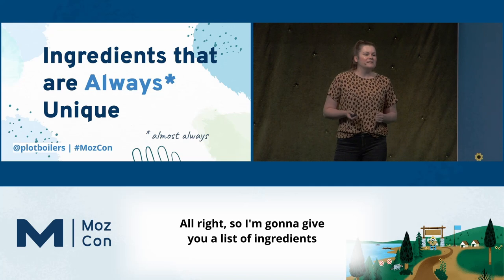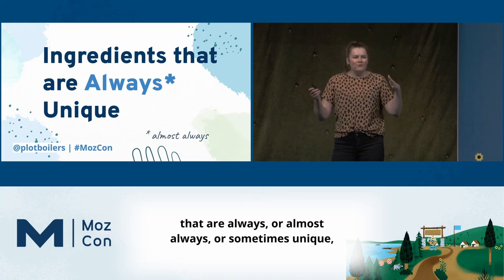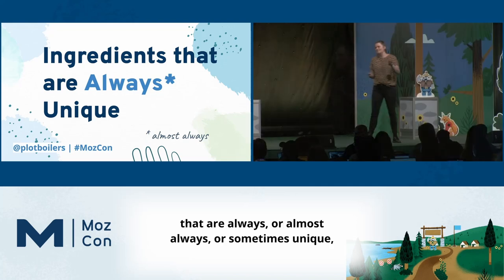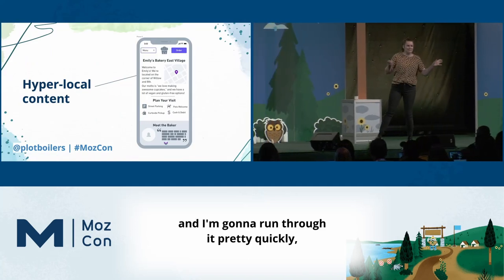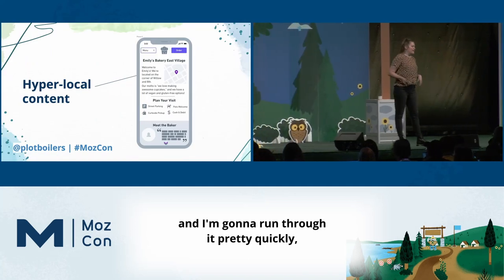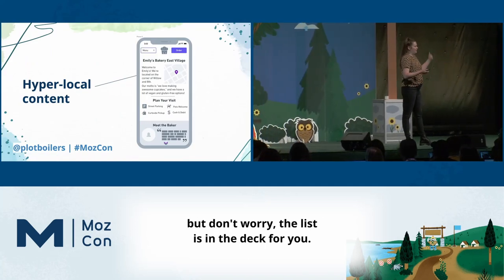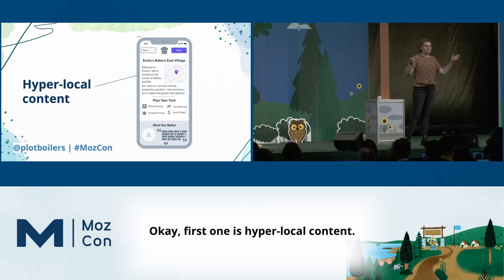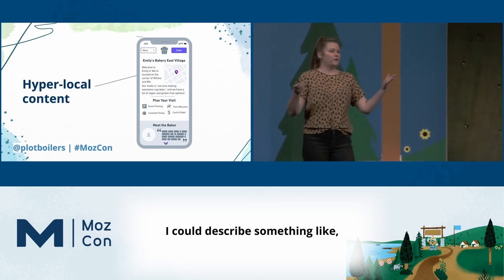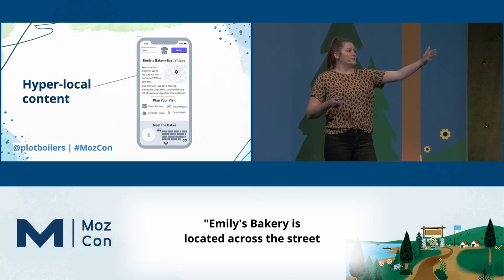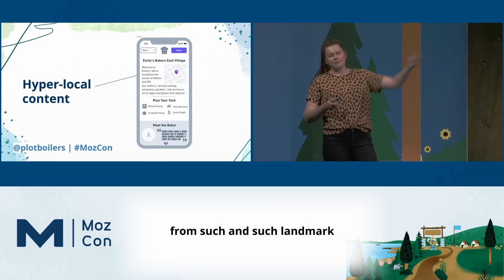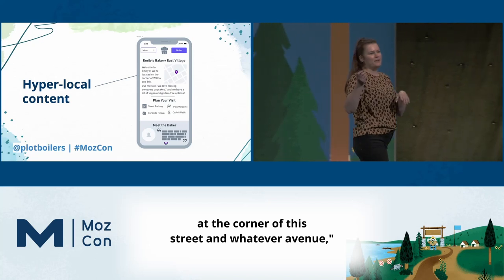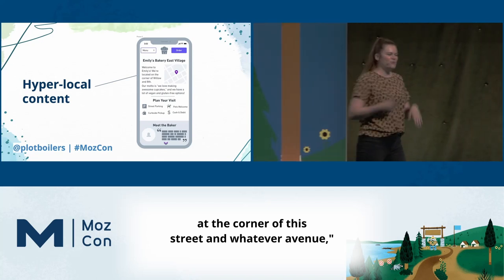I'm going to give you a list of ingredients that are always, or almost always, or sometimes unique, or have the potential to create unique value. It's a long list and I'll run through it quickly, but it's in the deck for you. First is hyperlocal content — content in paragraph form describing something like 'Emily's Bakery is located across the street from such-and-such landmark at the corner of this street and whatever avenue.' Even if you rewrite it with different words, it doesn't apply to any other location.